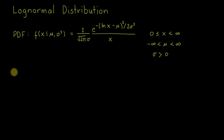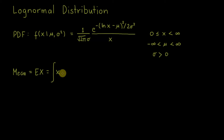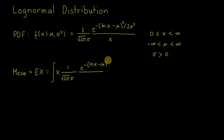Now let's start with our derivation of the mean. The mean is equal to the expectation of x. Since this is a continuous probability distribution, it is equal to the integral of x times the probability density function — which is 1 over square root of 2π, sigma, times e raised to negative of (ln x minus mu) squared over 2 sigma squared — then dx, where x is from 0 to infinity.